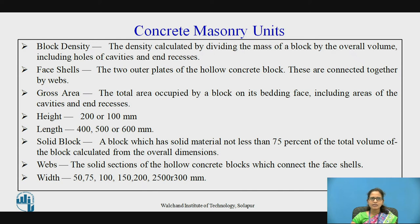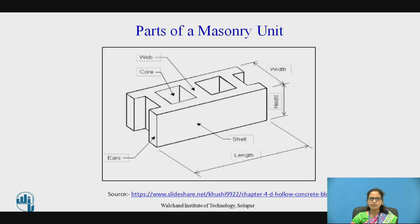The concrete masonry units — block density. The density of the block is calculated by dividing the mass of the block by the overall volume, which includes the holes, cavities, and end recesses. I will try to explain this with a sketch. The cores in the block should be 2 in number and preferably of oval shape. The face shells are the outer two plates of the masonry blocks, which are connected together by the webs. Webs are the solid sections of the hollow concrete block, connected together by the face shells.